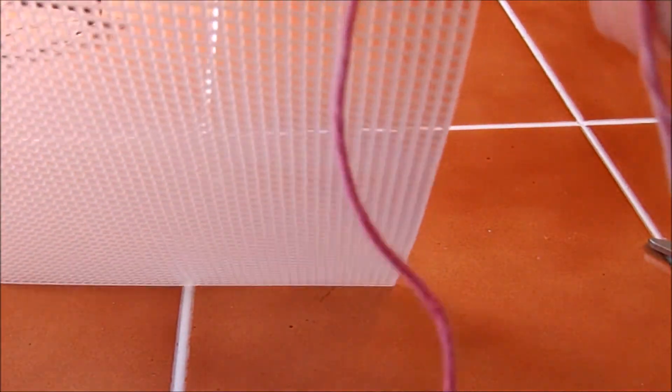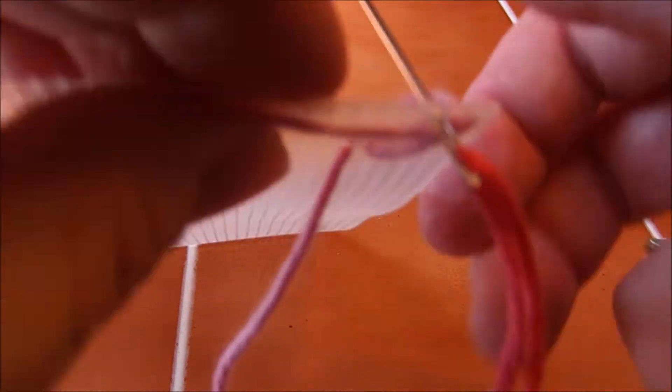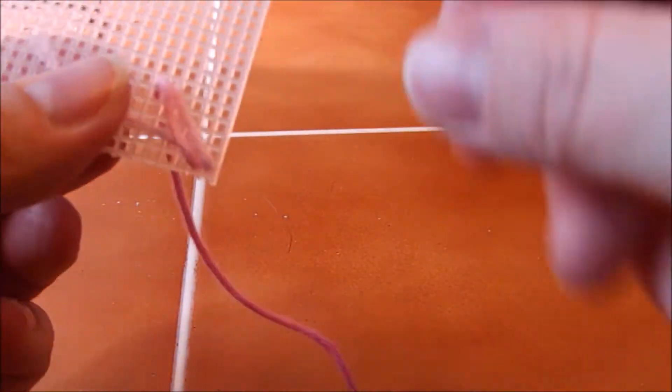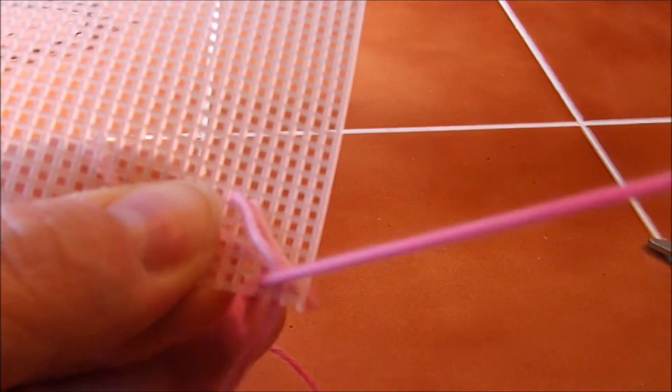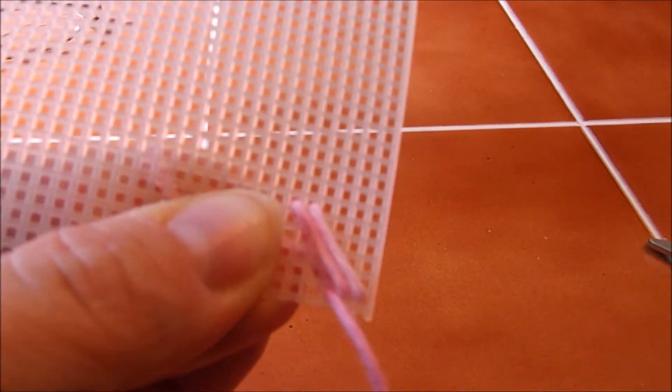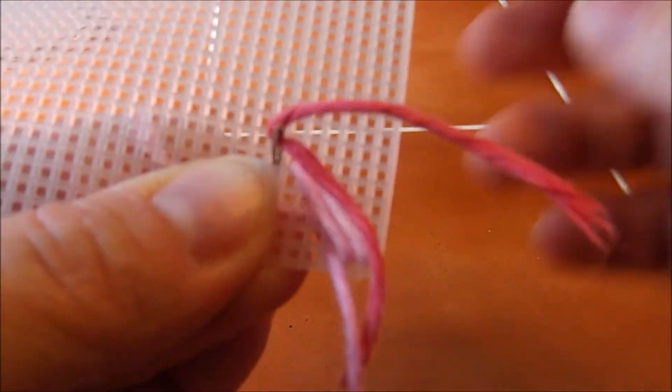And you're also wrapping it over that inch you left in the back. So you're going to secure that thread, whoops, that yarn in the back. So up and make sure you pull it tight and then down.